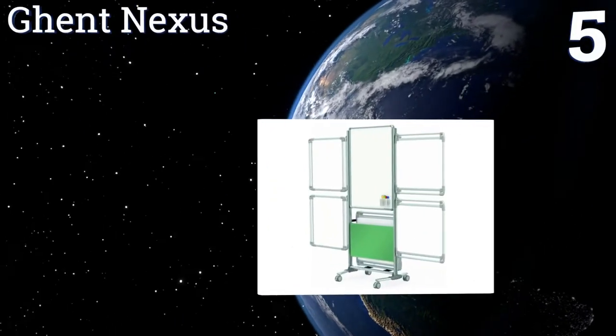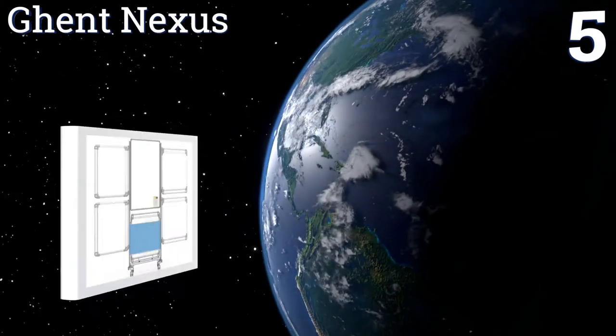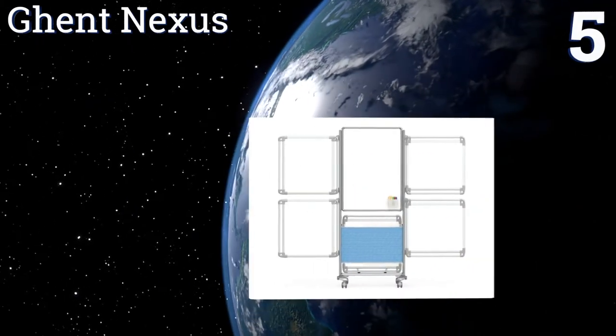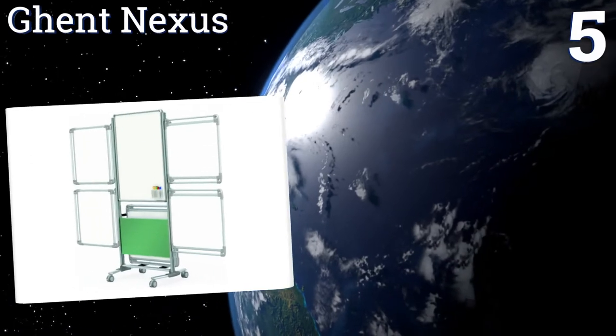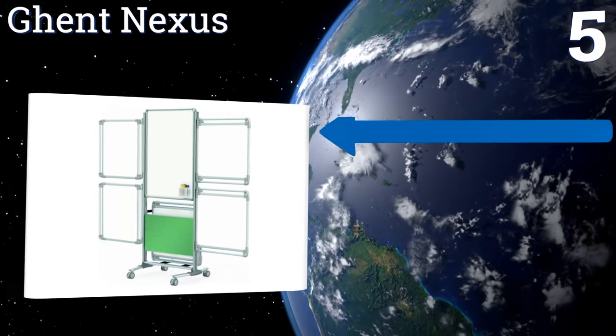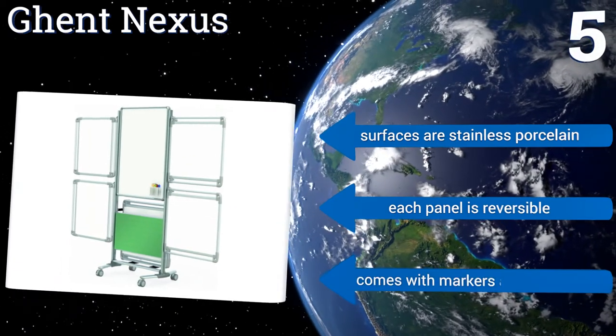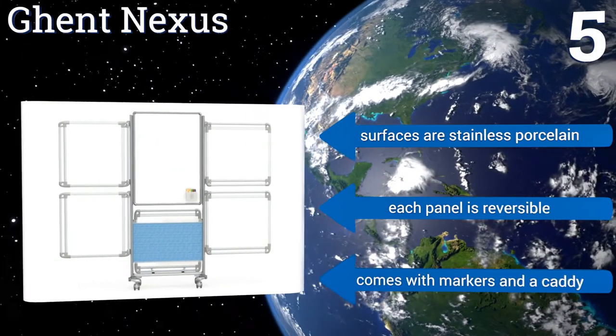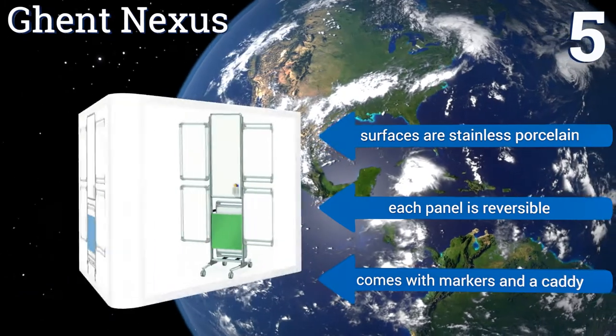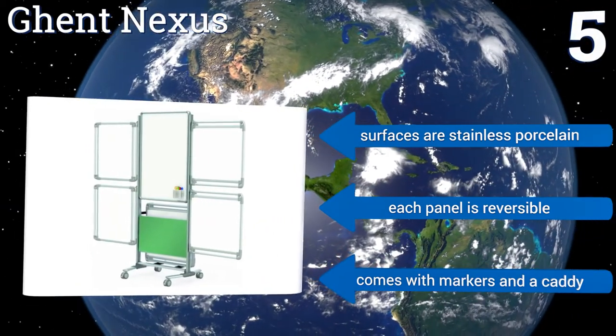Coming in at number five on our list, the Gent Nexus is a very costly, high-end product meant for ongoing projects that incorporate a lot of moving parts. This utility features eight surfaces, all connected by a central mount. Team members can focus on specific sections while also contributing to the whole. The surfaces are stainless porcelain and each panel is reversible. It comes with markers and a caddy.